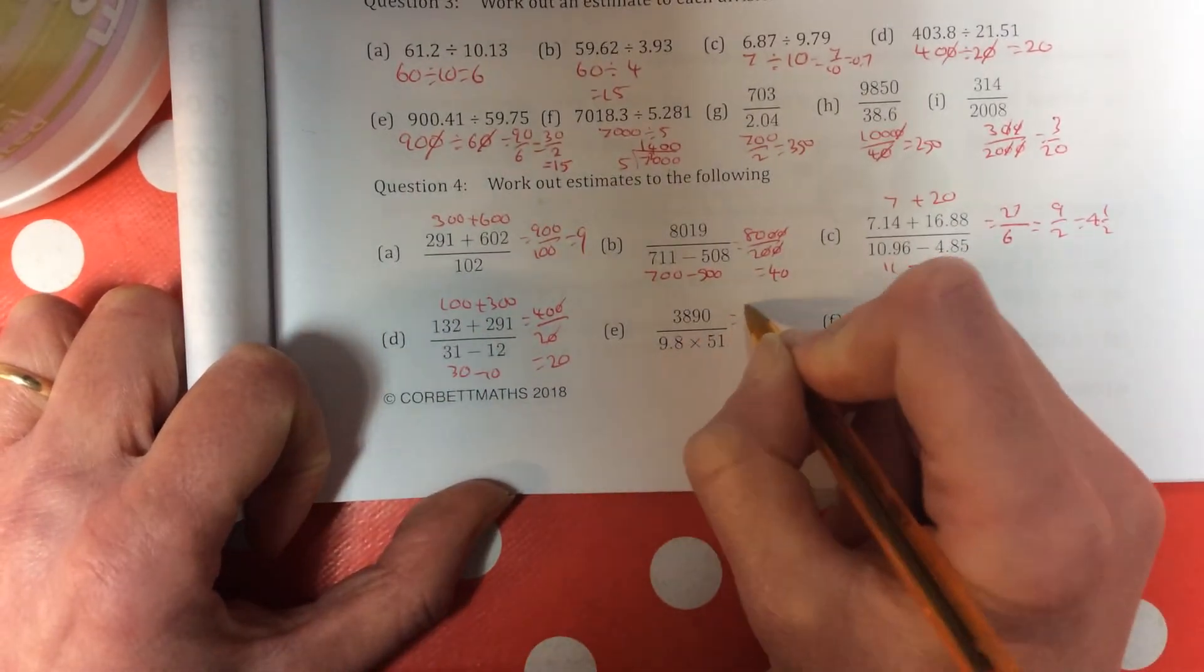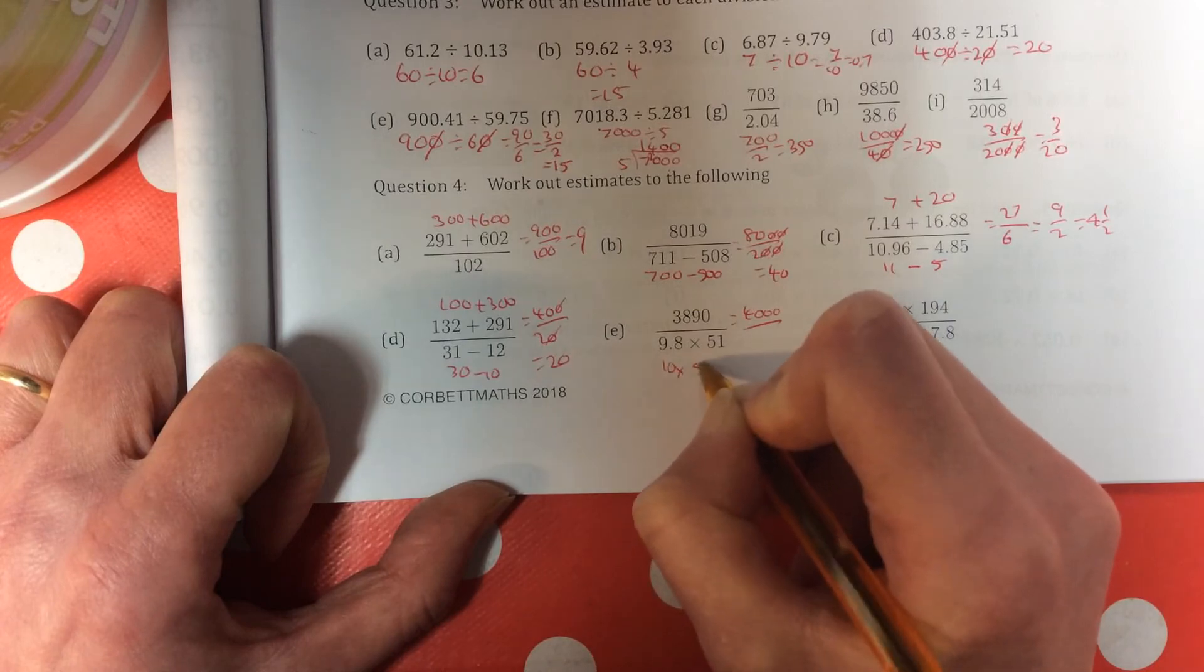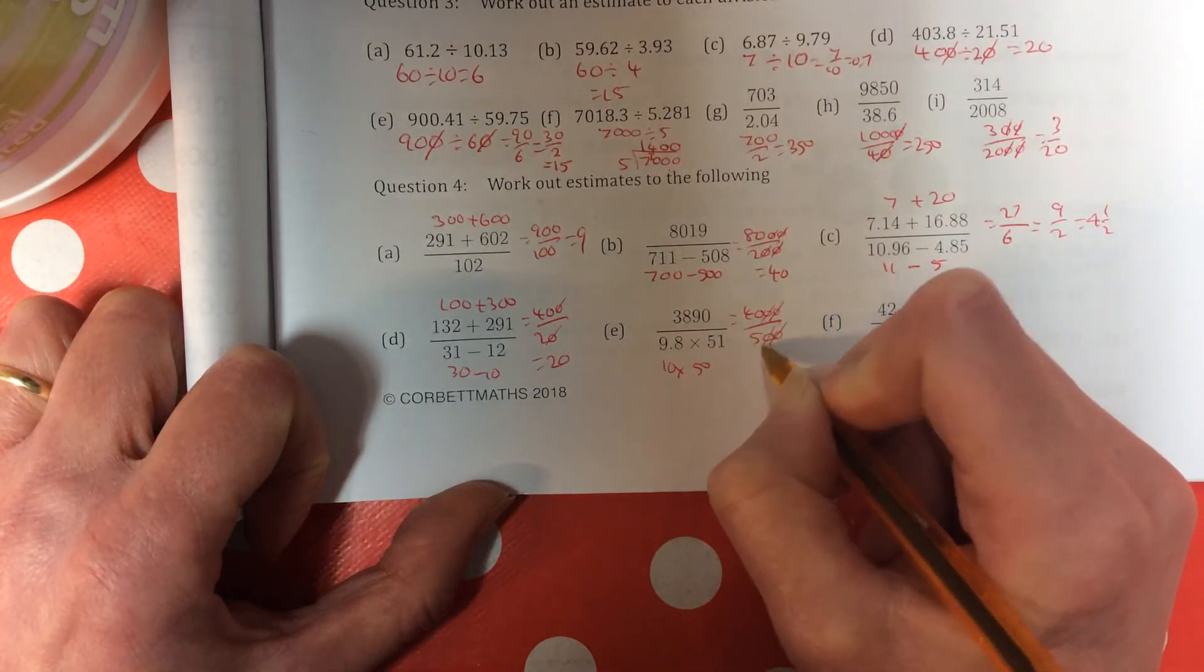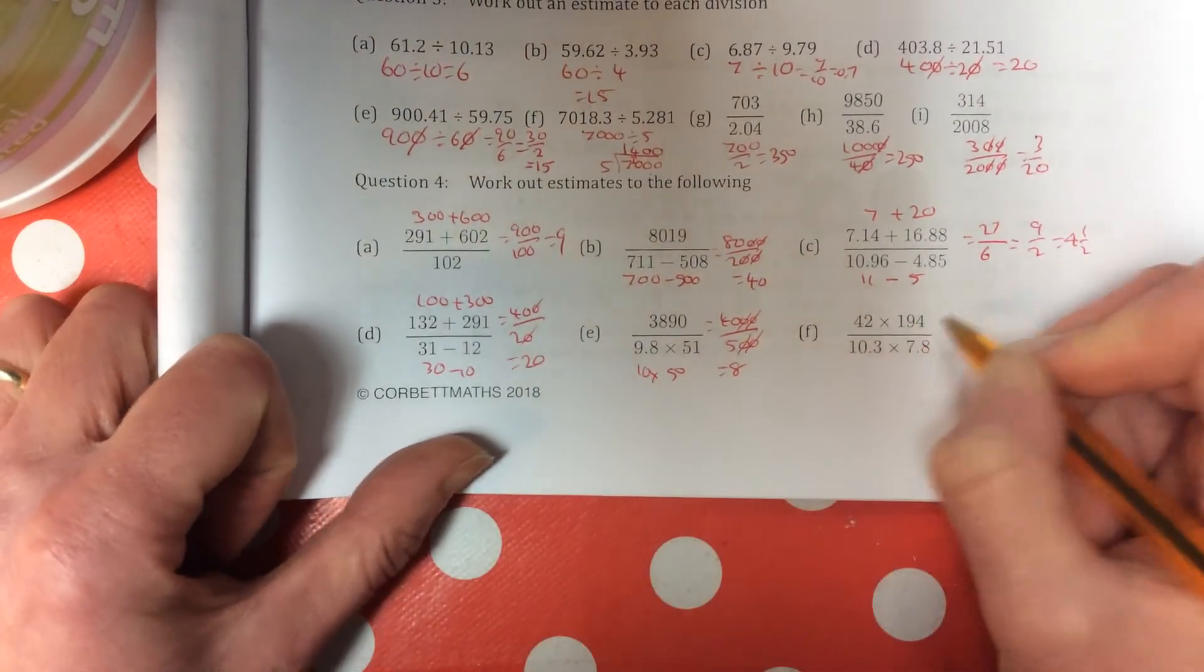Top line becomes 4,000. Bottom line becomes 10 times 50, which is 500. Take two noughts off the top and two noughts off the bottom. 40 divided by 5 is 8.